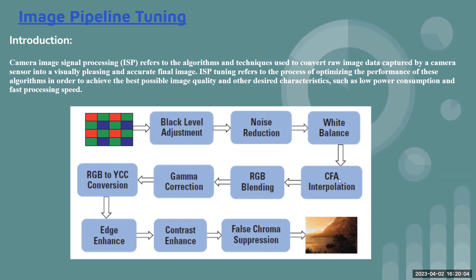Color filter array interpolation and RGB blending happens, then you need to do the gamma correction curve. If you're not doing gamma correction, it will be difficult for your camera to identify the colors. There's also RGB to YCC conversion so you can perform sharpness tuning, edge enhancement, contrast, and false color suppression. This is a very high-level diagram and I'll be making a separate course on this.